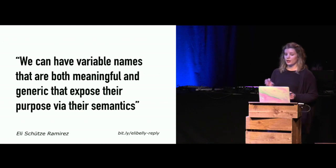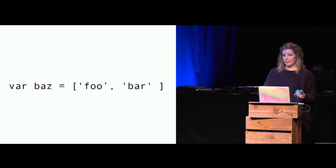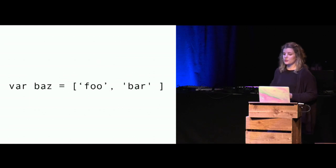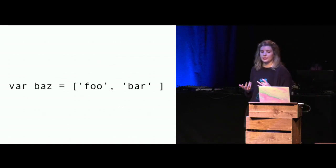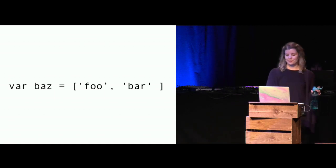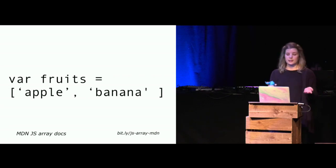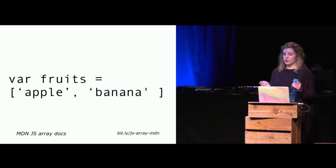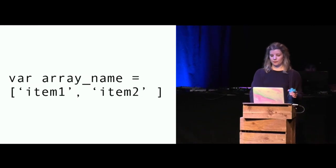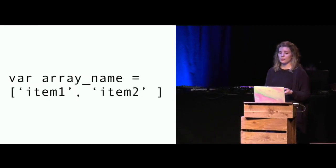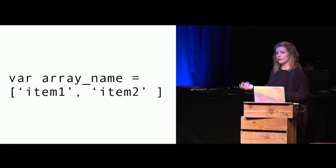She uses the example of an array. Here's an array named 'baz' with two items, 'foo' and 'bar.' If you're just learning what arrays are and how to work with them, these variable names are way too abstract. Instead, we can name our array something like 'list of fruits' and call the items 'apple' and 'banana.' You could also name the array 'array name' and the items 'item one' and 'item two' — not the most creative, but it's still promoting comprehension much better than those nondescript variable names.